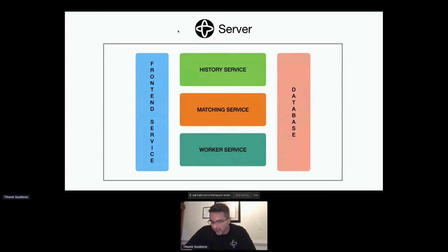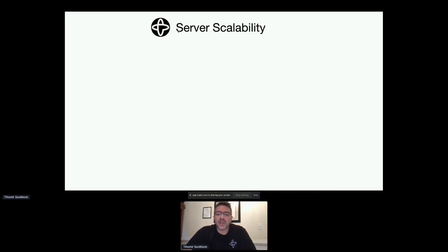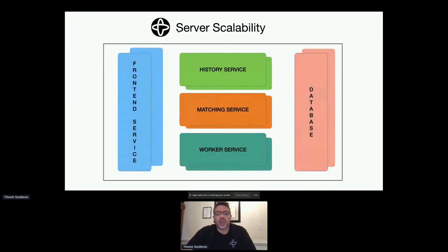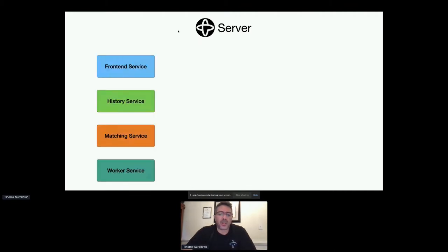Let's take a look inside the server. The server is composed of five independent services that communicate with each other. The basic idea is that you have full control of your server's scalability in terms of horizontal scaling by deploying your server on multiple nodes. You also have vertical scaling by being able to replicate each of the internal services of the server, achieving scalability for your applications as well.